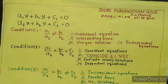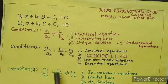They are independent equations, these are dependent equations. The condition 3: a1 by a2 is equal to b1 by b2,